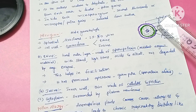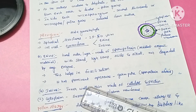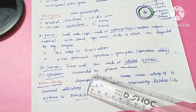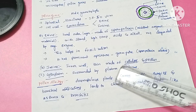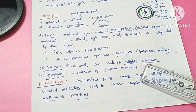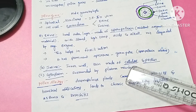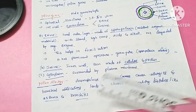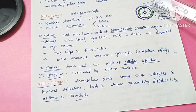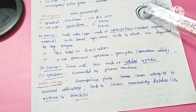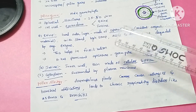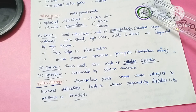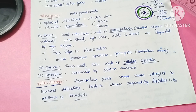The next layer is the intine, which is the innermost layer of the pollen grain cell wall. The intine is made up of cellulose and pectin. Inside the intine is the cytoplasm, which is surrounded by a plasma membrane. So the pollen grain structure consists of exine, intine, and then cytoplasm surrounded by plasma membrane.